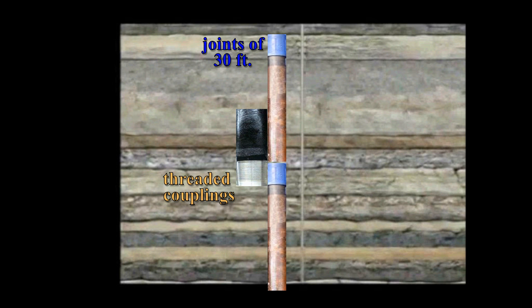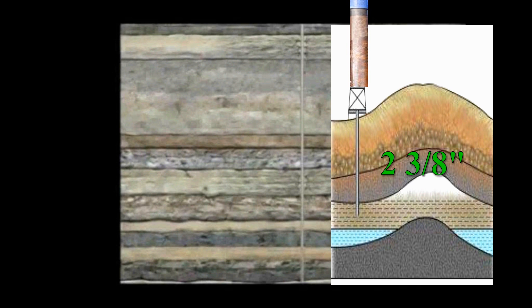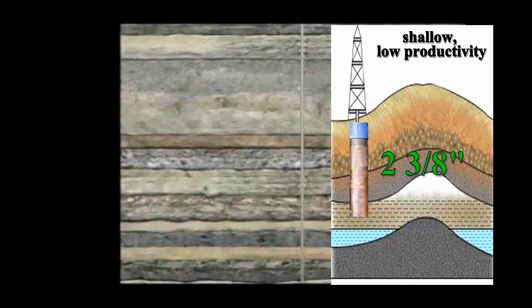Manufactured in joints of 30 feet with threaded couplings, the diameter of the tubing can vary depending on the fluid amount projected to be produced. For example, small tubing that is 2 3 eighths inches outside diameter is used for shallow, low productivity wells, while large, 6 inch outside diameter tubing is used in high volume gas wells.